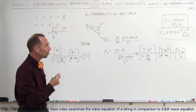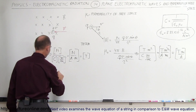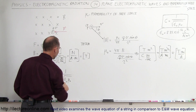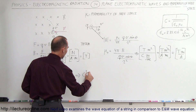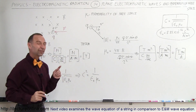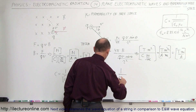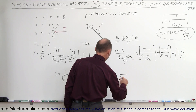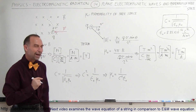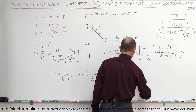Now we need to find the value of mu sub-naught. Since C equals 1 divided by the square root of epsilon sub-naught times mu sub-naught, squaring both sides gives C squared equals 1 over epsilon sub-naught times mu sub-naught. Solving for mu sub-naught gives mu sub-naught equals 1 over C squared times epsilon sub-naught. Since epsilon sub-naught can be written as 1 over 4πK, this becomes 4πK divided by C squared.